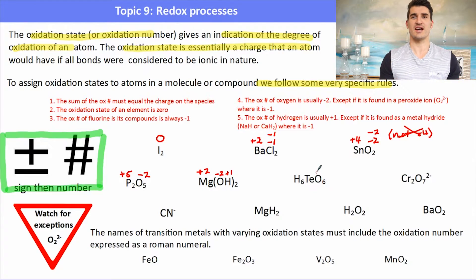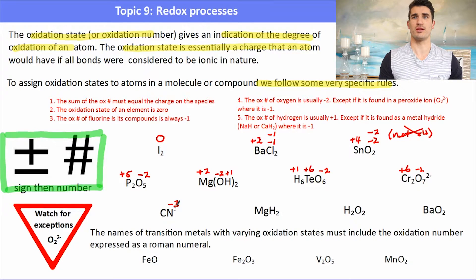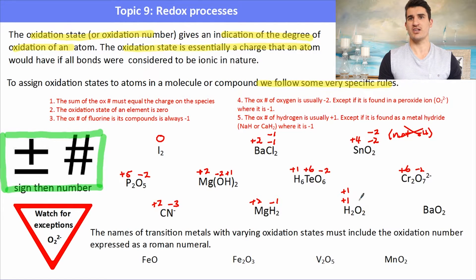In H₆TeO₆, oxygen is −2 (six oxygens = −12) and hydrogen is +1 (six hydrogens = +6), leaving tellurium as +6. For the dichromate ion Cr₂O₇²⁻, oxygen is −2 (seven oxygens = −14), and accounting for the 2− charge, each chromium is +6. In CN⁻, nitrogen is −3 so carbon must be +2. In MgH₂ (a metal hydride), hydrogen is −1. In H₂O₂ (hydrogen peroxide), hydrogen is +1 so each oxygen carries −1.